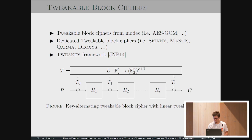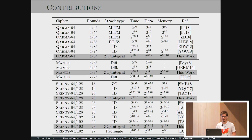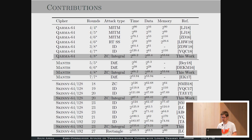Our contributions: we analyze several tweakable block ciphers. For Karma and Mantis, instead of counting the rounds, we count the number of S-boxes that we can attack. We have an attack for Karma for 12 S-box applications, for Mantis also for 12, and for Skinny we can attack 20 rounds for Skinny-64-128 and 23 rounds for Skinny-64-192.